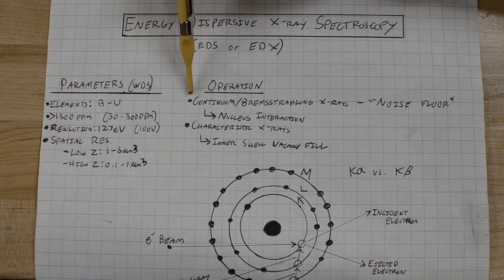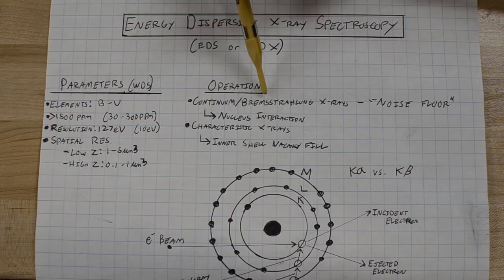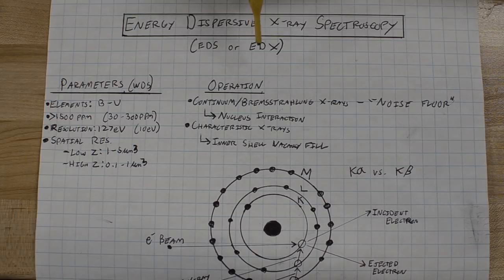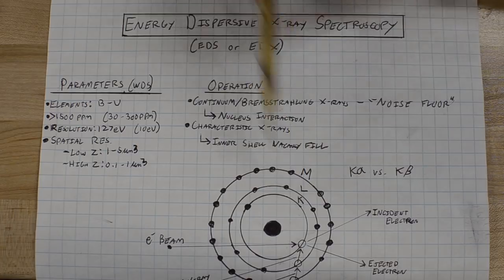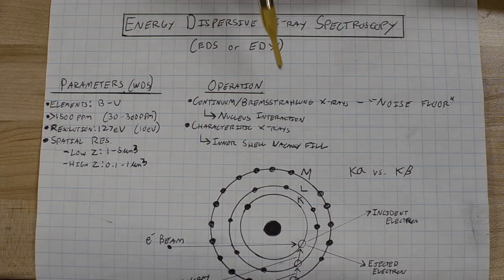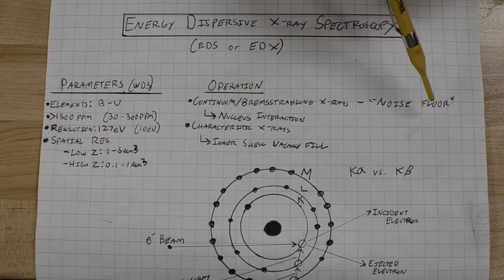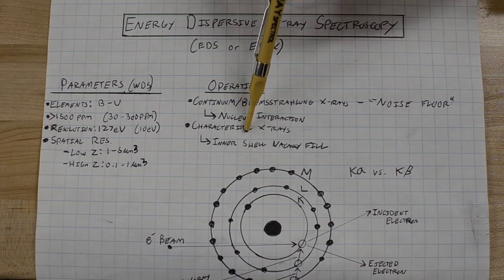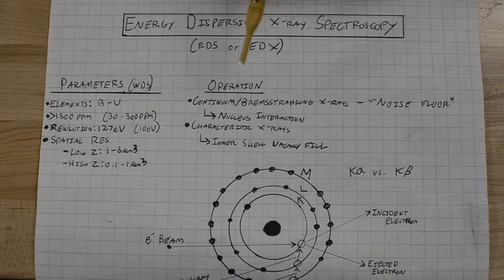The first is basically a nuisance to what we're trying to do here. This is continuum X-ray generation. The German word for it is Bremsstrahlung. These X-rays are not characteristic of the atom they came from. There's no way of differentiating continuum X-rays from a cobalt atom from an iron atom. This basically makes up the noise floor.